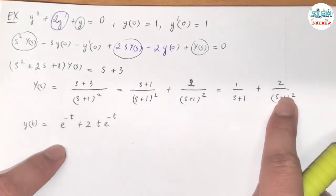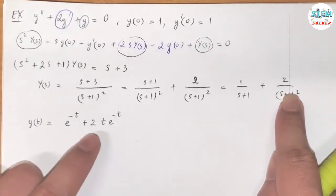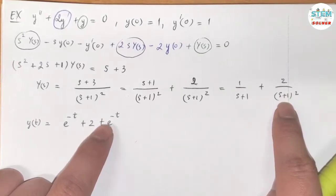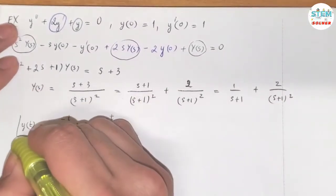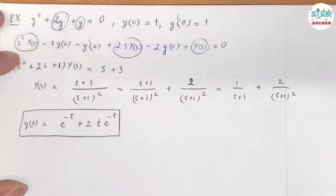So you ignore the plus 1. So you have 1 over s squared. That gives you t. And the shift is 1. So you have e to the negative t. So this is your final answer. That's it.